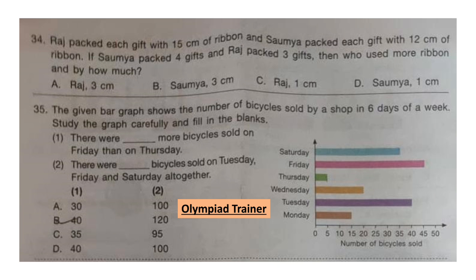Question 34. Raj packed each gift with 15 cm of ribbon and Soumya packed each gift with 12 cm of ribbon. If Soumya packed 4 gifts and Raj packed 3 gifts, then who used more ribbon and by how much? Soumya used 12×4 = 48 cm, and Raj used 15×3 = 45 cm. Soumya used more, and the difference is 3 cm. The answer is option B: Soumya by 3 cm.